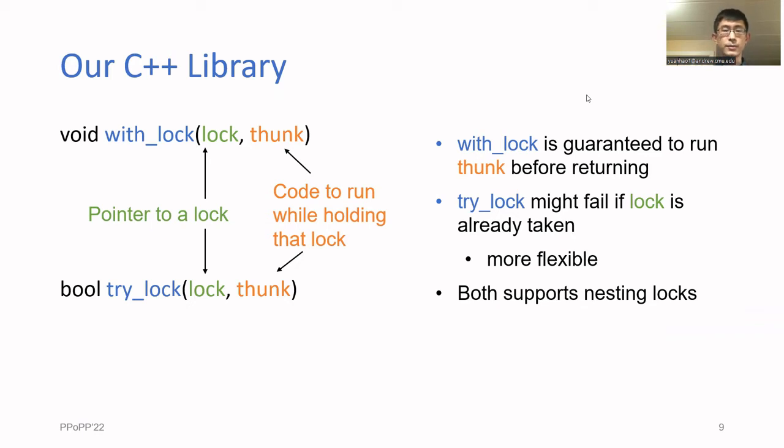TryLock is more flexible because it lets the user decide what to do if there's contention on the lock. For example, you can either decide to try again or move on to a different operation or add some backoff before trying again. Note that you can always implement withLock by just putting tryLock in a loop. In this presentation, we'll focus on implementing tryLock.